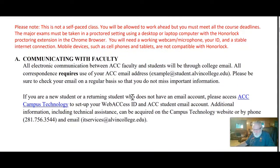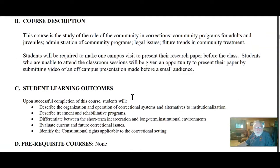For communication, definitely go through email. If you call my office number, I'm not there — they don't allow us on campus with the exception of when I'm teaching the police academy. If you call and leave a message, I'll get an email notification, so why not just send me an email directly? As far as this course, it's a study of the role of communities and corrections, community programs for adults and juveniles, administration of community programs such as probation, legal issues, and future trends in community treatment. The student learning outcomes include: describing the organization and operation of correctional systems and alternatives to institutionalization, describing treatment and rehabilitation programs, differentiating between short-term incarceration and long-term institutional environments, evaluating current and future correction issues, and identifying constitutional rights applicable to the correctional setting.